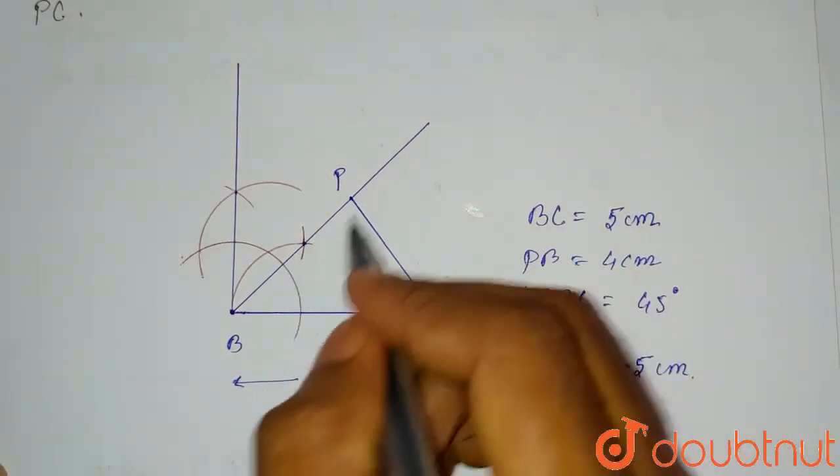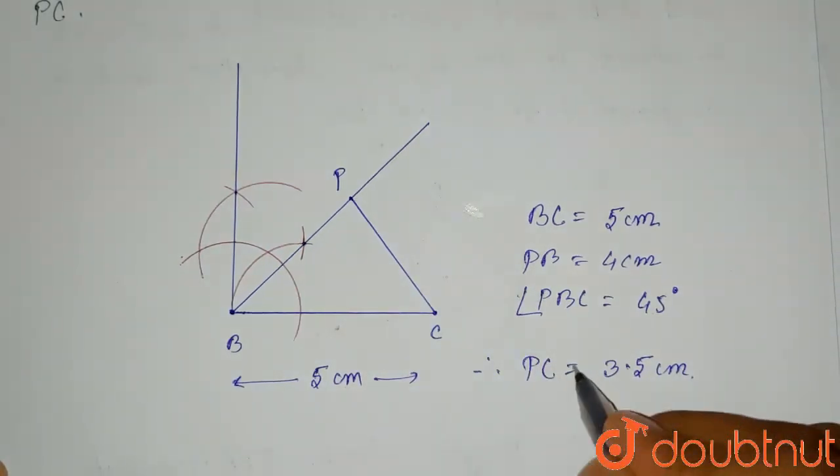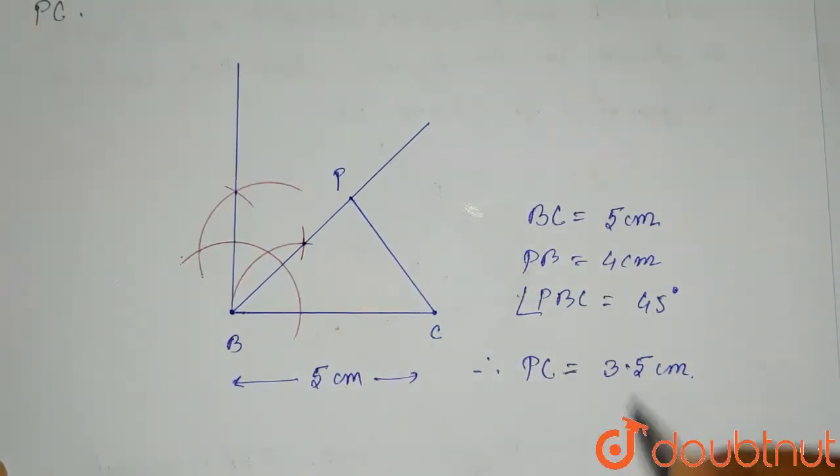So this is the diagram of triangle PBC. So this is the length of PC, which is 3.5 centimeters. So this is the required solution of this question. Thank you.